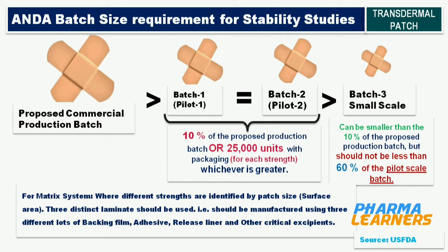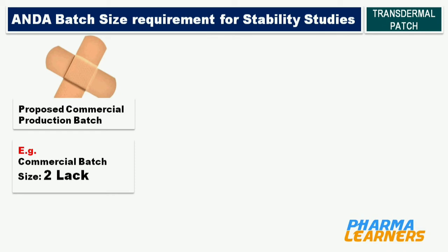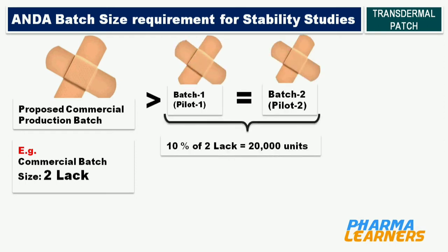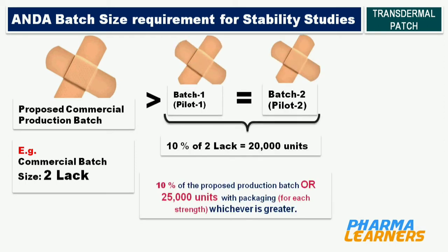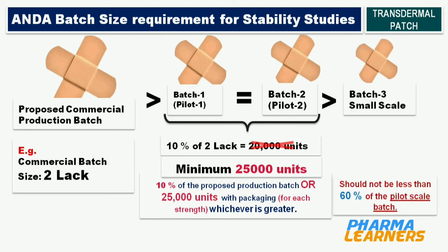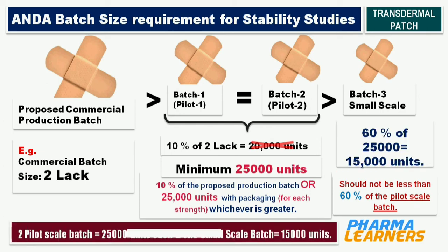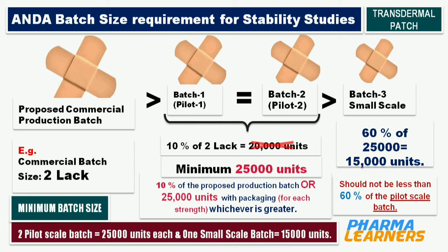Let's take an example. If the proposed commercial batch size is 2 lakh units, then 10% of 2 lakh is 20,000 units. But the guidance says a minimum of 25,000 units, so the minimum quantity of the 2 pilot batches is 25,000 units each. For the third batch, 60% of 25,000 is 15,000. So the minimum batch size for two pilot-scale batches is 25,000 units each, and the third small-scale batch is 15,000 units.